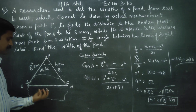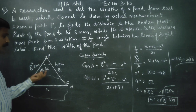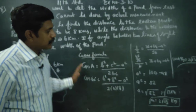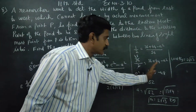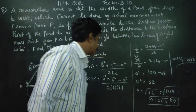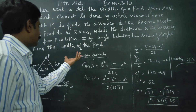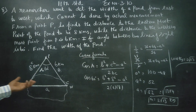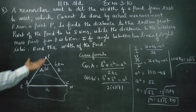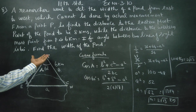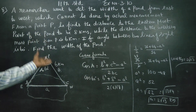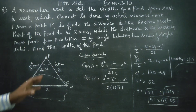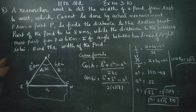Let CV be the width of the pond and P be the point of observation. This is the core of the sum. The cosine formula is used to find the third side.